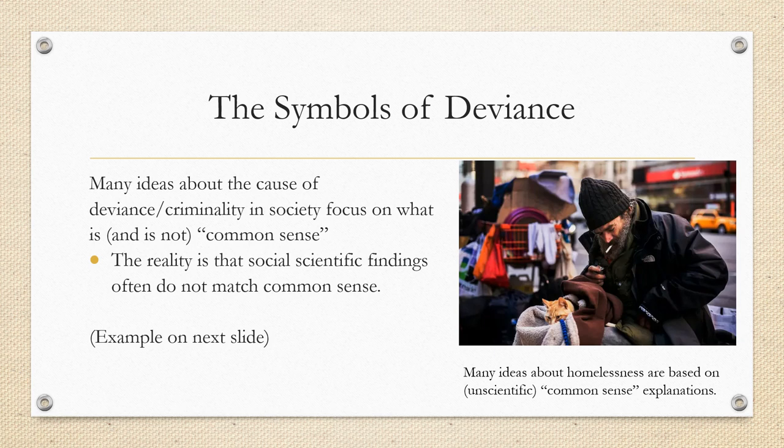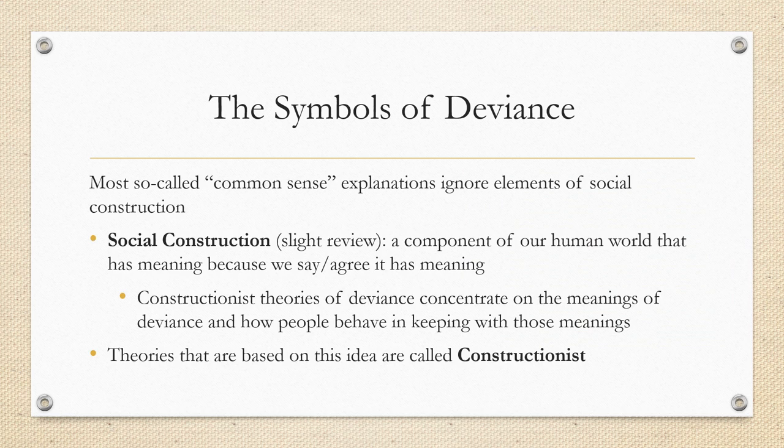Many ideas about the cause of deviance and criminality in society focus on what is and is not common sense. The reality is that social scientific findings often do not match common sense. So many of the ideas about homelessness, for example, are based on unscientific concepts of common sense, such as the reason why somebody is homeless is because they don't have a job. So-called common sense explanations ignore elements of social construction, defined as a component of our human world that has meaning because we say or agree that it has meaning.